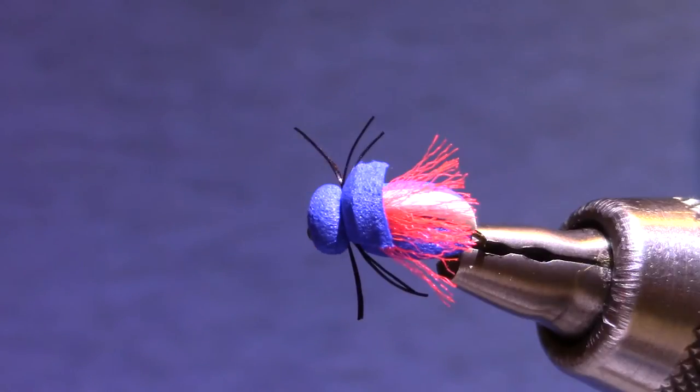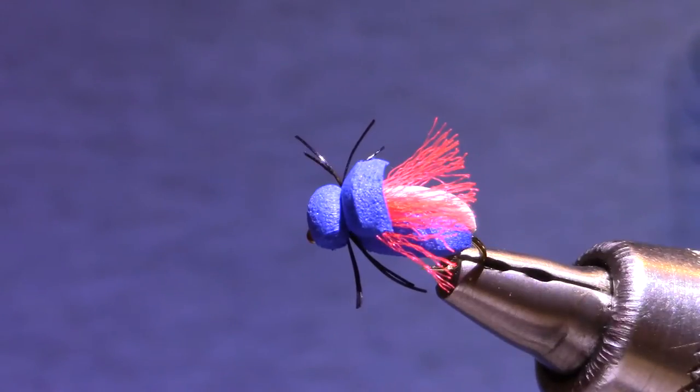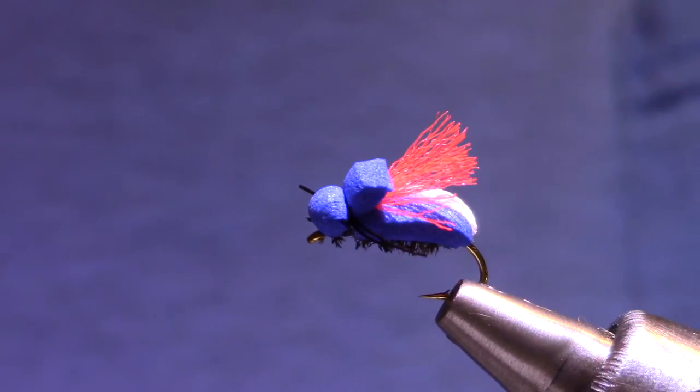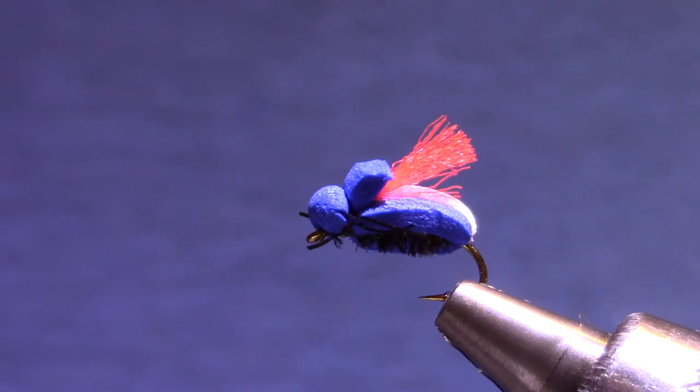Tonight's FlySquad pattern is the Patriot Beetle, which is appropriate since this February 23rd is when we are going to assemble and present all of the flies we collected for Project Healing Waters in our fly drive.